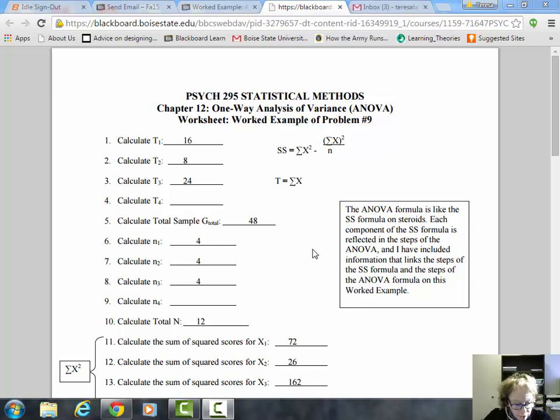To the right, you'll see a big N representing the total number of cases across all three groups, big G which is the grand total of all scores, and sum of X squared. Sometimes that's given to you in these problems, sometimes you'll have to calculate it yourself, so we'll walk through the process of calculating it.